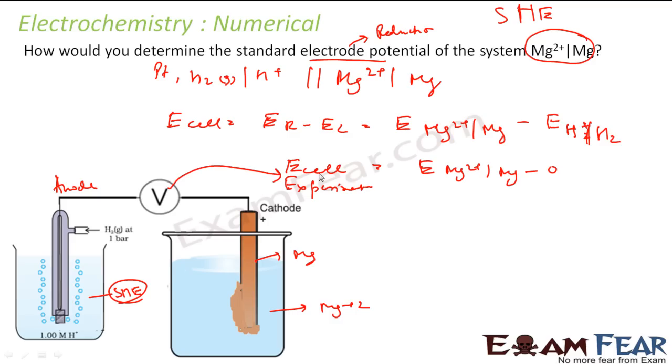So this is what you get. This is what you have to find and that is my answer. Correct. Because this value you will get experimentally when the moment you set up this in your lab, you will get some value here in the reading. Whatever you get, just pick the value and that becomes your standard electrode potential of Mg2+ to Mg.